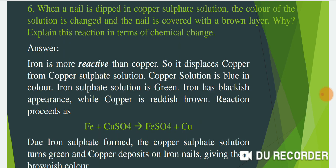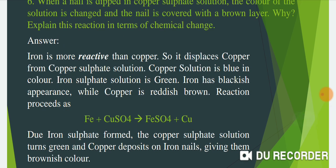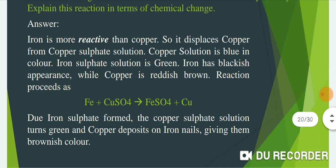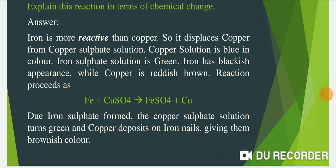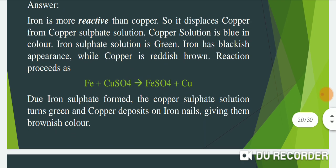The answer is: iron is more reactive than copper, so it displaces copper from copper sulfate solution. Copper sulfate solution is blue in color; iron sulfate solution is green. Iron has a blackish appearance while copper is reddish brown. The reaction proceeds as: Fe + CuSO₄ → FeSO₄ + Cu. Due to iron sulfate formed, the copper sulfate solution turns green and copper deposits on the iron nails giving them a brownish color.